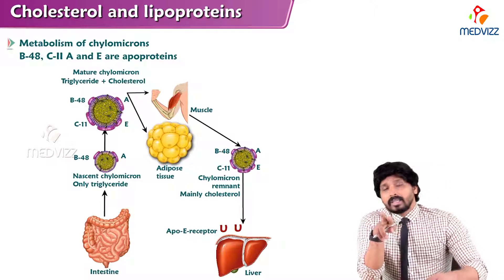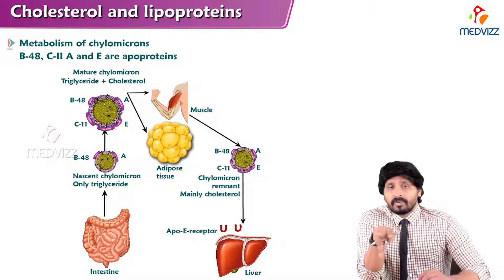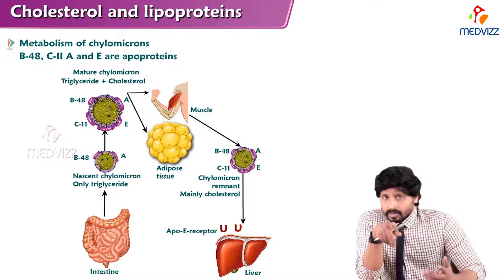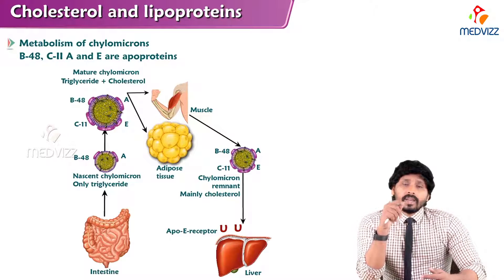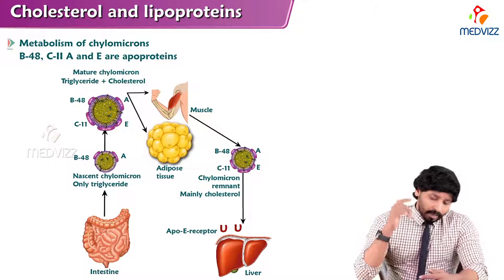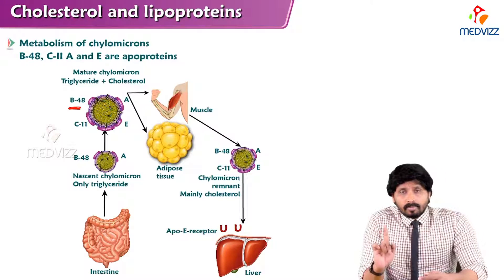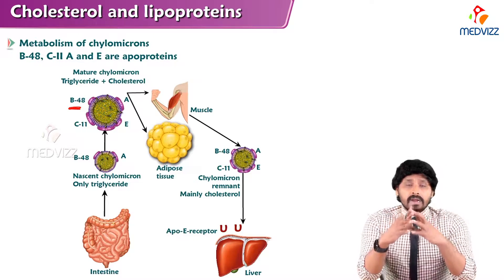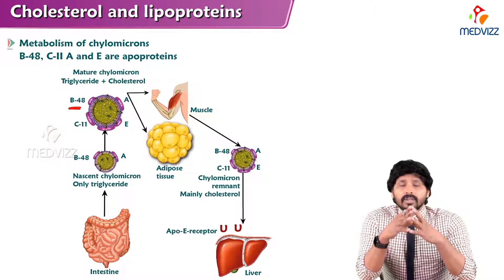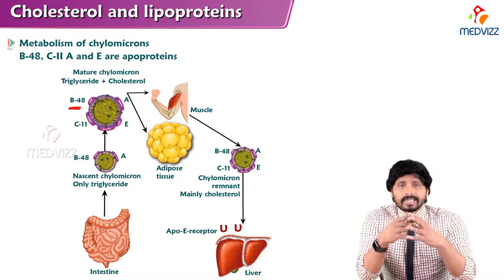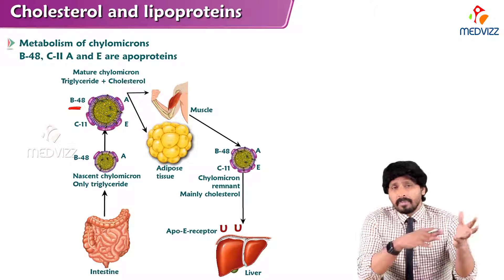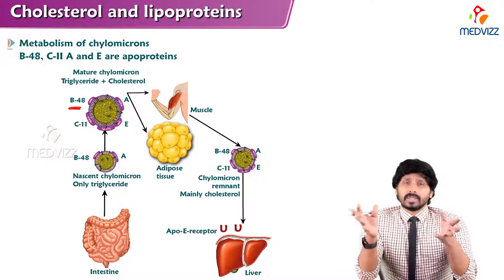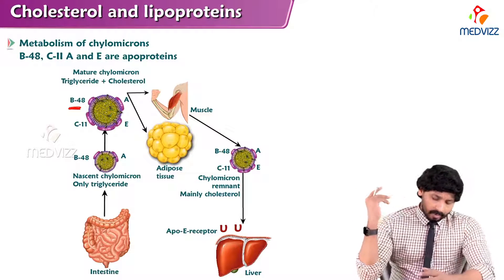Regarding ApoB100 and ApoB48: chylomicron is produced in the liver, but also produced in the intestine. In the liver, the protein is ApoB100. If the chylomicron is produced in the intestine, the protein is ApoB48. So please make note of this: ApoB100 is present in chylomicron produced from the liver, and ApoB48 is present in chylomicron produced from the intestine. We have already discussed how ApoB100 and ApoB48 differ and the reason behind the half-synthesized ApoB48.